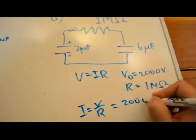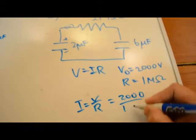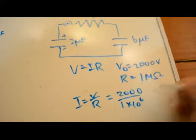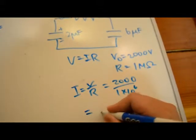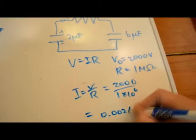which is also equal to 2000 over 1 times 10 to the 6, which equals about 0.002 amps.